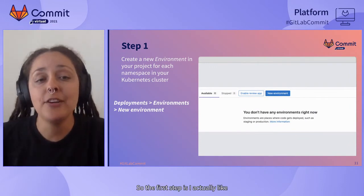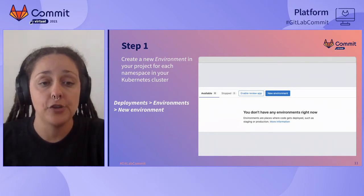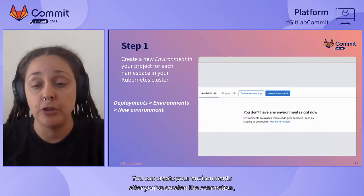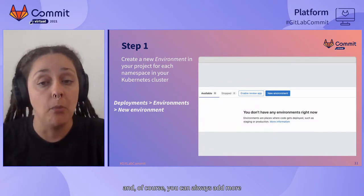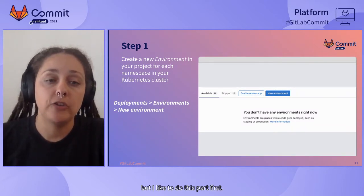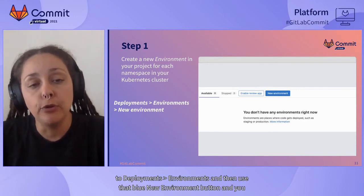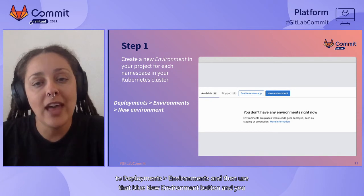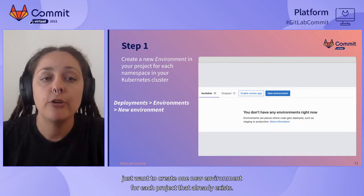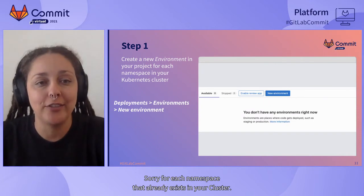The first step is I actually like to create those environments before creating the initial connection. You don't have to do this first — you can create your environments after you've made the connection, and you can always add more environments and namespaces down the road. But I like to do this part first. You'll find this option inside your GitLab project under Deployments > Environments, then use that blue New Environment button. Create one new environment for each namespace that already exists in your cluster.